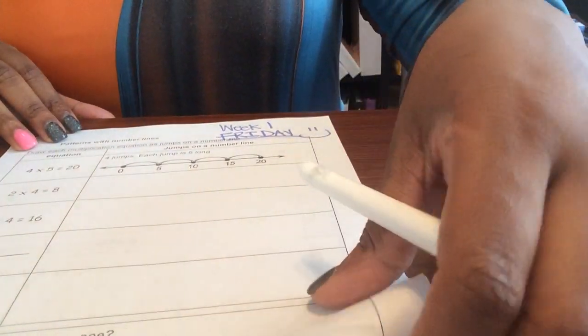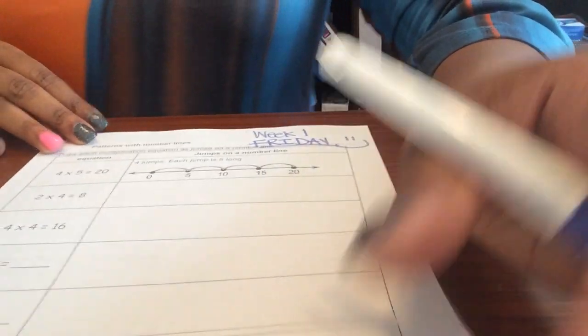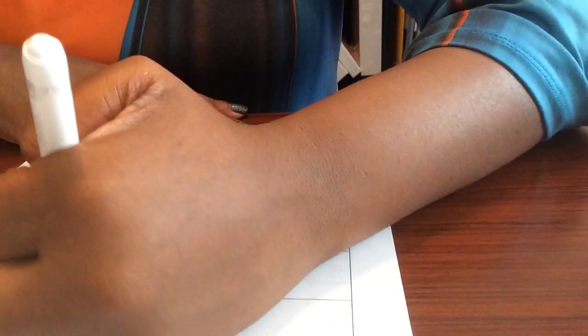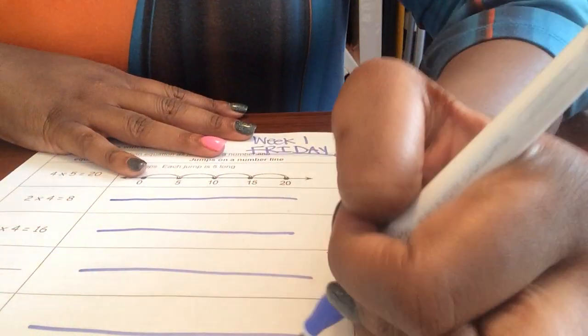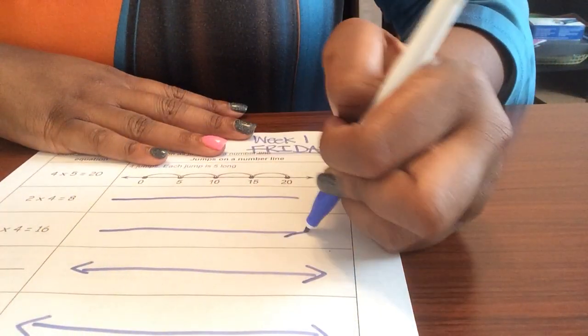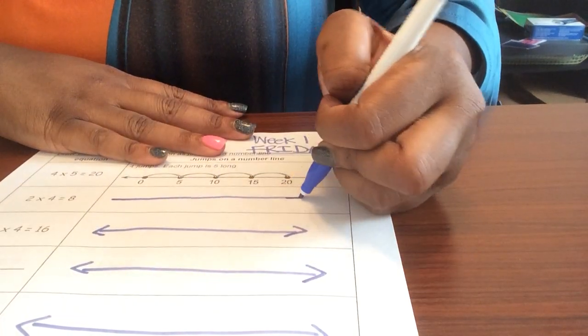with number lines. Now on this one you don't have a number line drawn for you, so I'm gonna go ahead and draw that number line. Number lines have arrows because numbers are continuous. Numbers do not stop going.